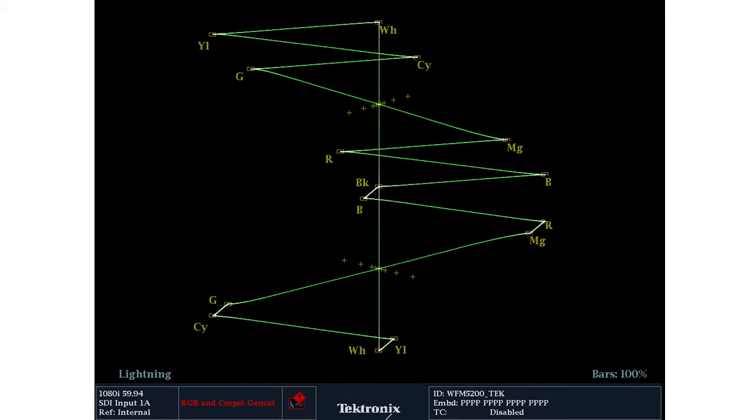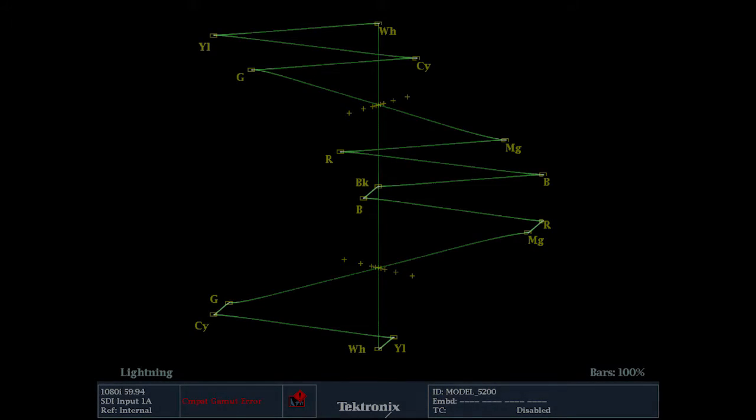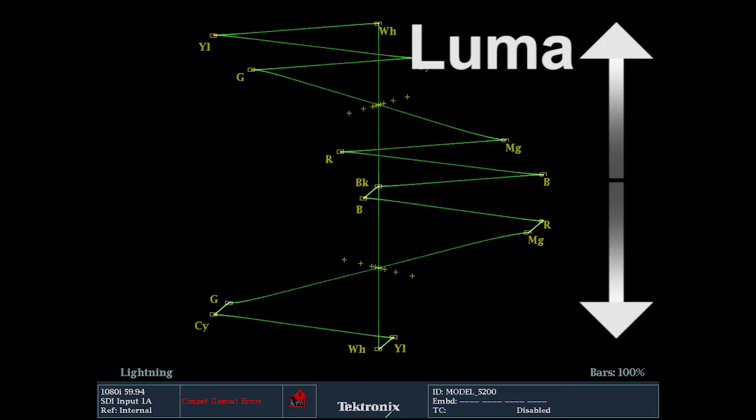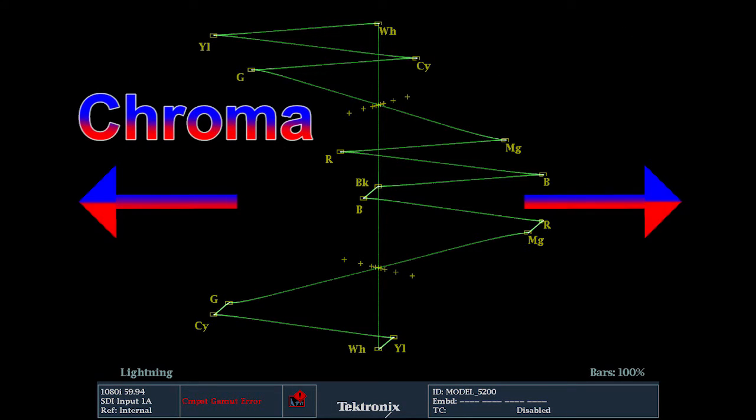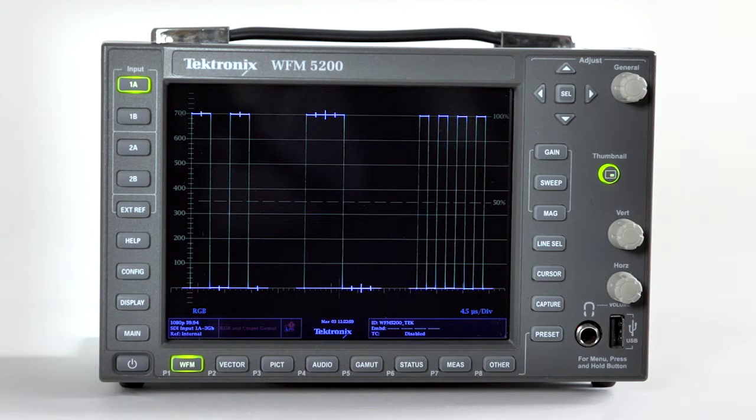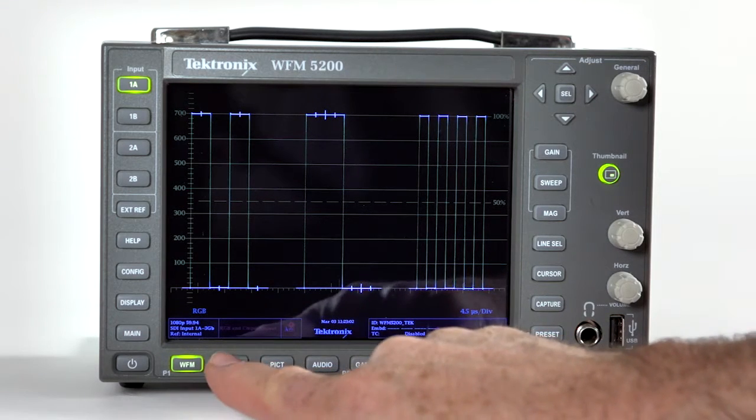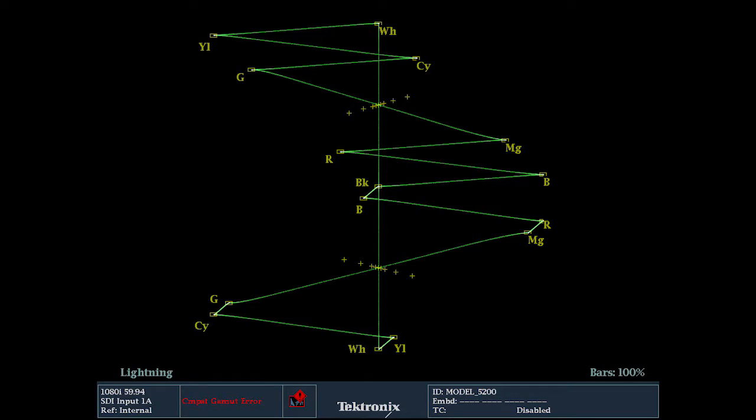The user can quickly identify the component in error and make adjustments to the Luma in the vertical direction and Chroma in the horizontal direction. There is no need to switch between waveform and vector displays. It can all be done simply within the Tektronix lightning display.